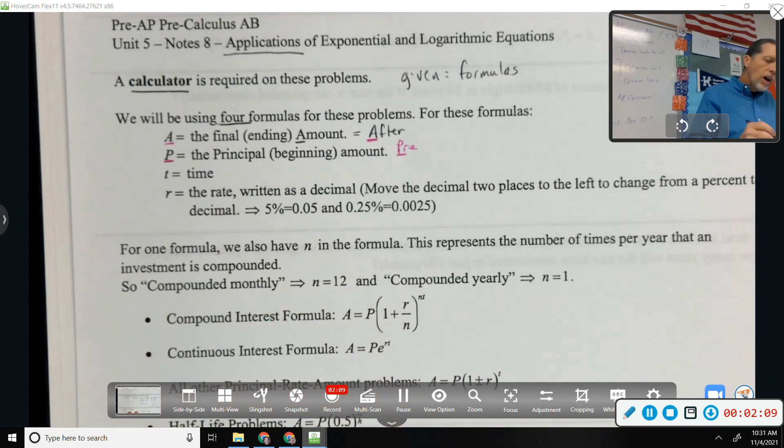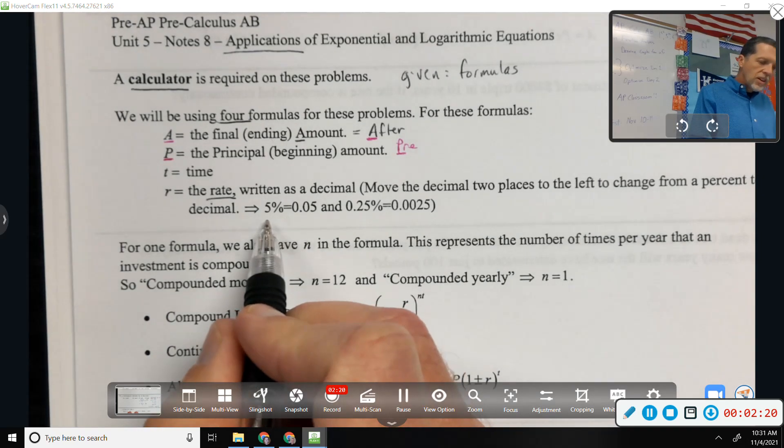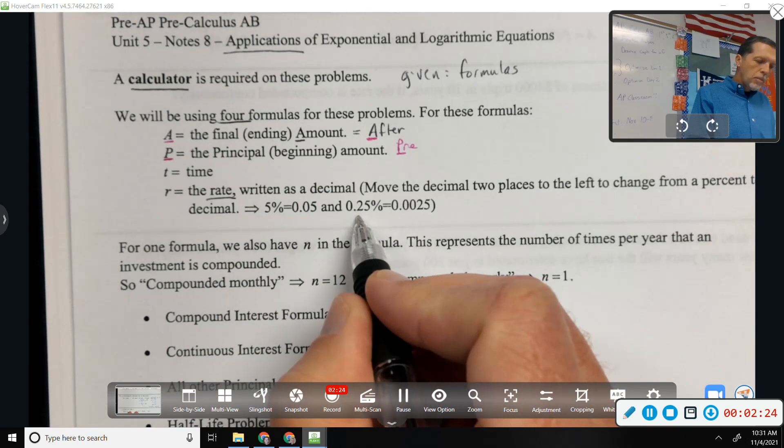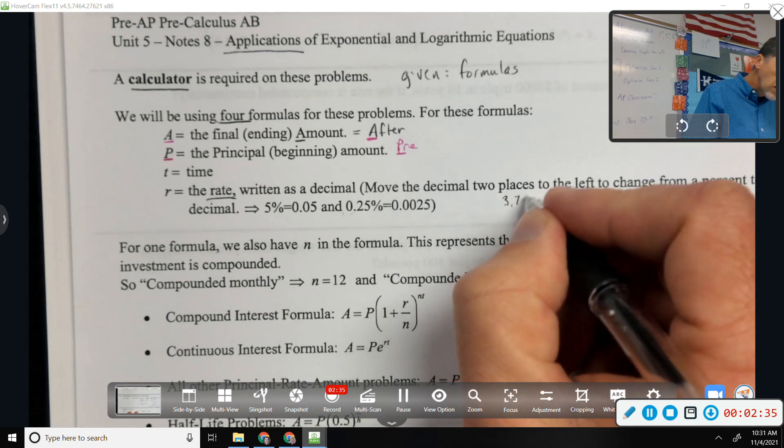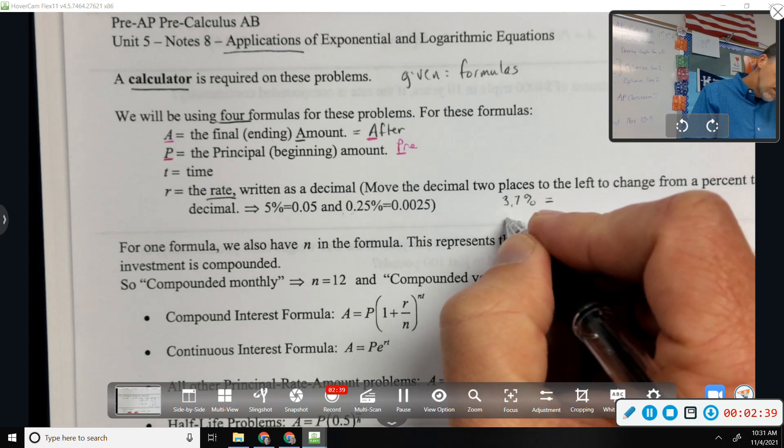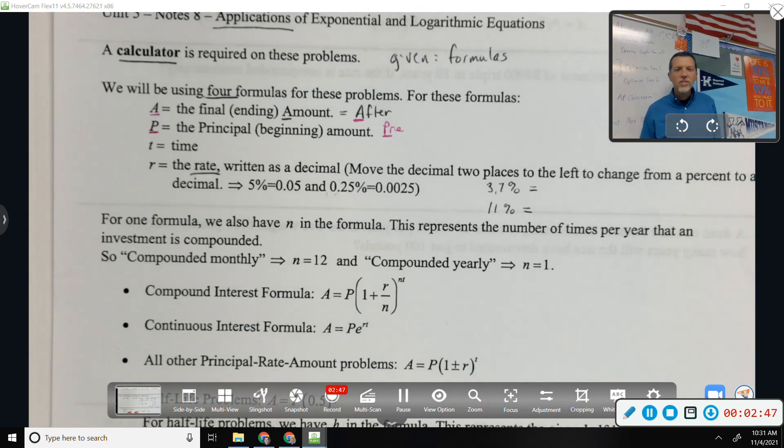T is time, R is rate. Although you know this, don't forget it while you're working the problem - make sure that you do the percent to decimal thing. Move it two decimal places. A couple of examples: 5% is 0.05, 0.25% is 0.0025. You've done this before, the percent to decimal thing.